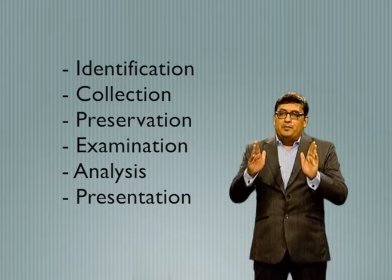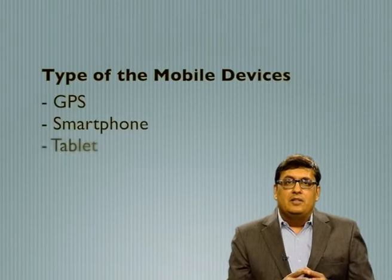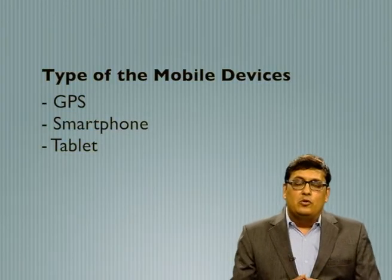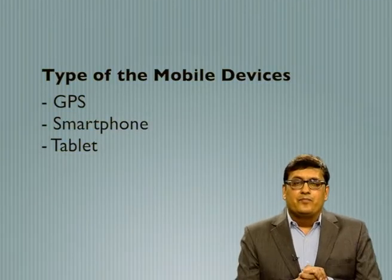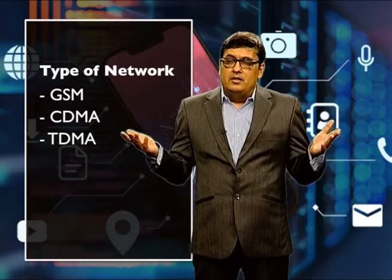The first step is identification. As the first step of every digital investigation involving a mobile device, the forensics expert needs to identify the type of mobile device — for example, GPS, smartphone, tablet, etc. — the type of network, whether GSM, CDMA, or TDMA, and the carrier or service provider, which can be done by reverse lookup.